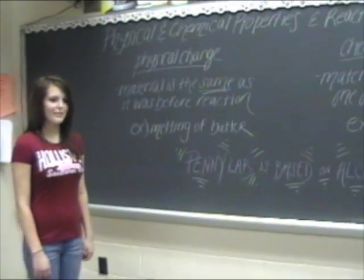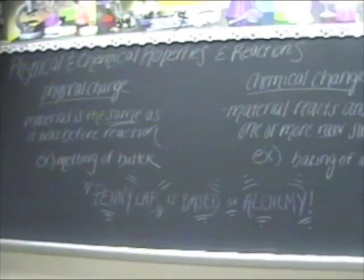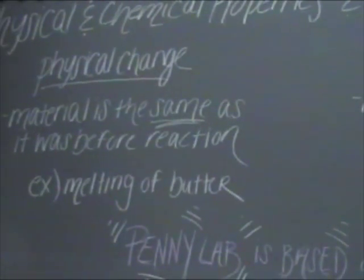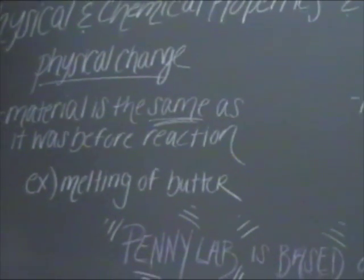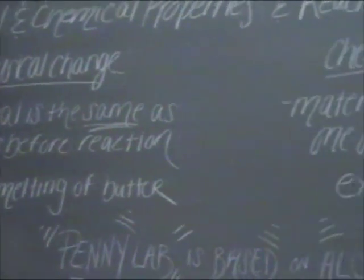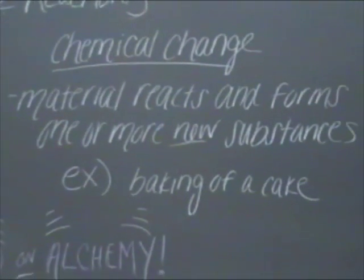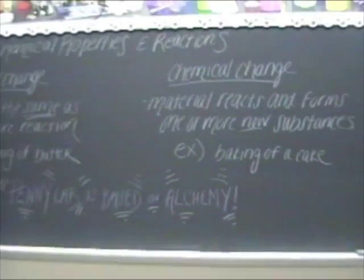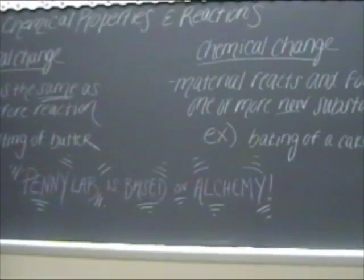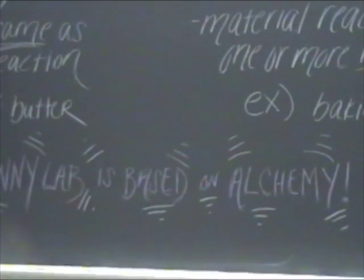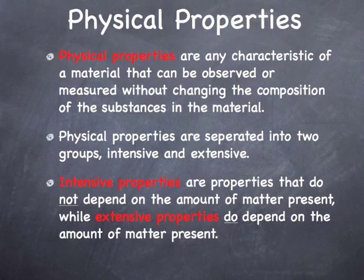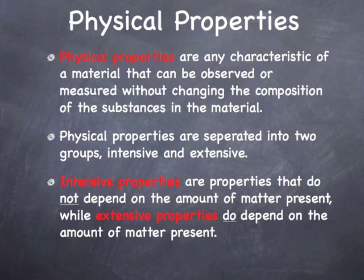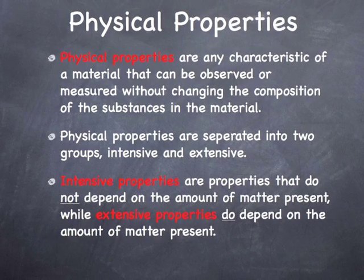In order to understand the penny lab, you need to know physical and chemical properties and reactions. A physical change is when a material is the same as it was before the reaction. A chemical change is when a material reacts and forms one or more new substances, such as the baking of a cake. Physical properties are any characteristic of a material that can be observed or measured without changing the composition of the substances in the material.